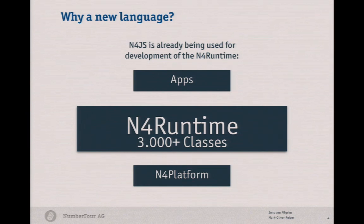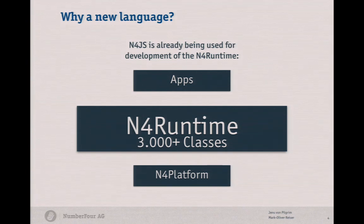It contains approximately 3,000 classes, and this runtime is written in N4JS. When you write a framework with this amount of classes, you really need types — at least that's my opinion. You need content assist, you want to get errors as soon as possible at compile time, not at runtime. So this is why you need a static type system. And our apps are running in the browser or on Node.js, so we absolutely needed JavaScript.